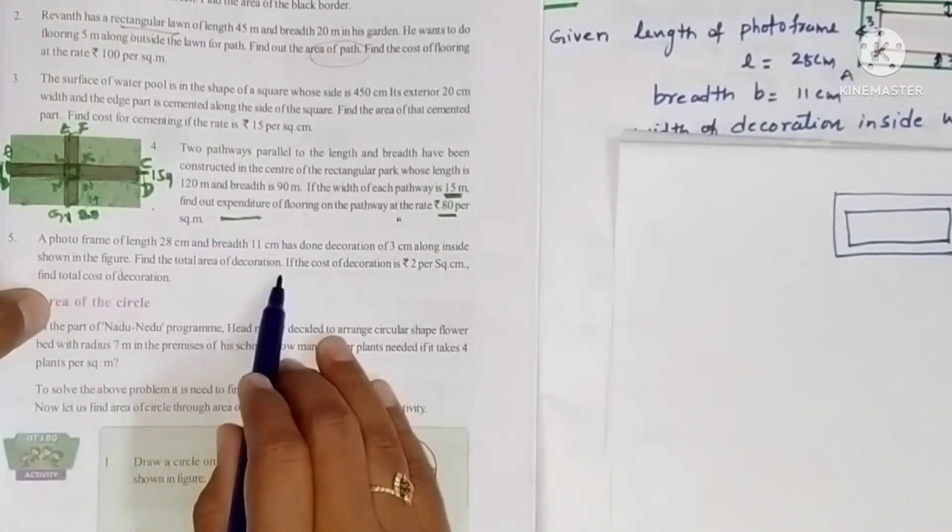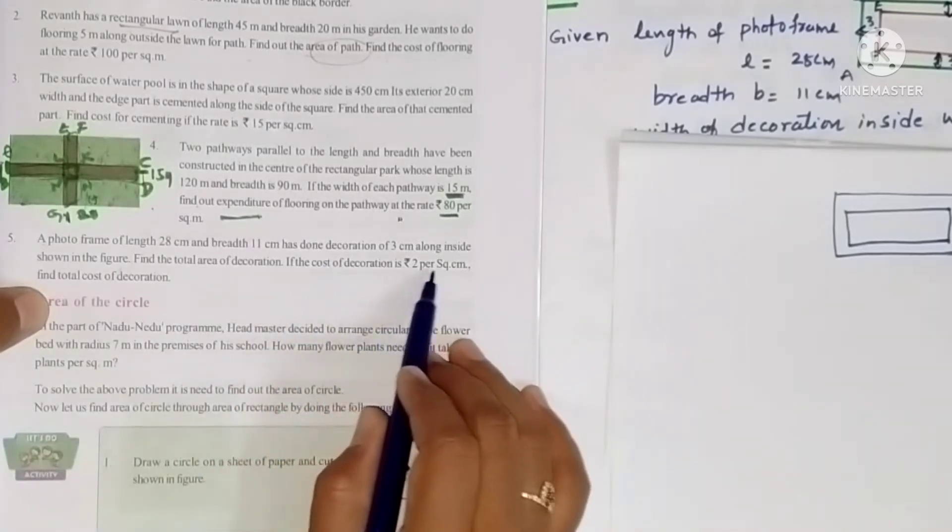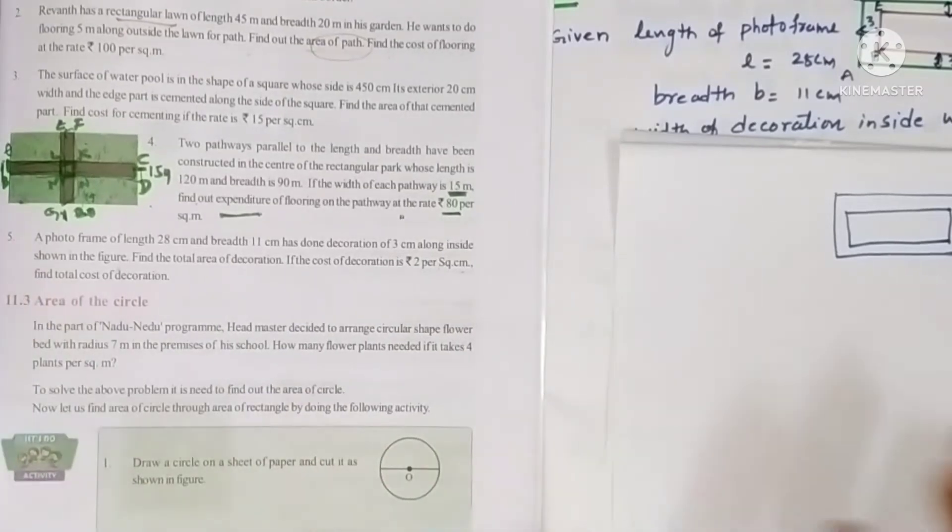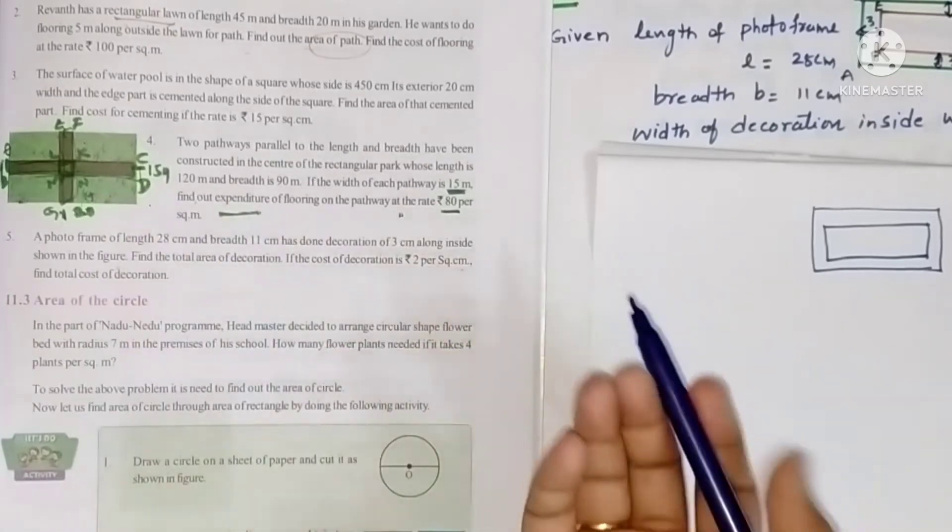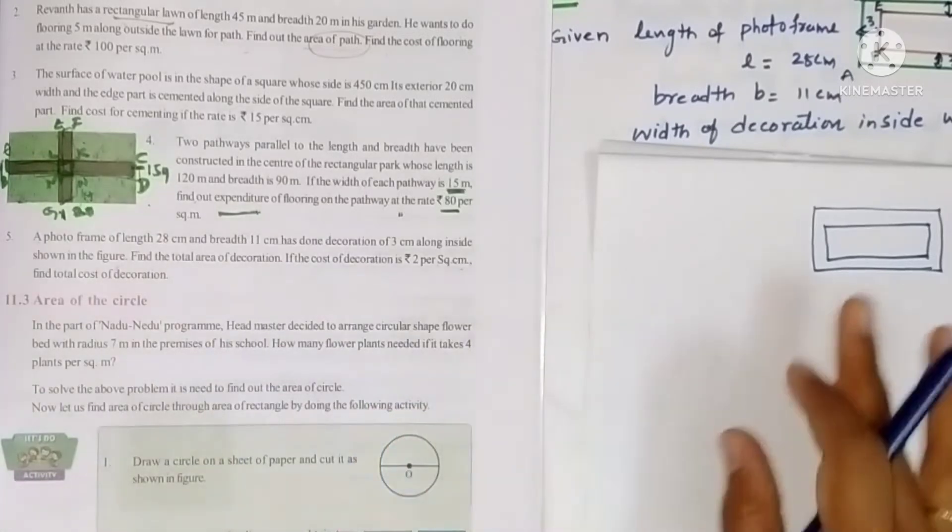Find the total area of decoration. If the cost of decoration is rupees 2 per square centimeter, find the total cost of decoration. So students, here a photo frame of length and breadth they gave, means you can clearly guess this photo frame is in the shape of a rectangle.